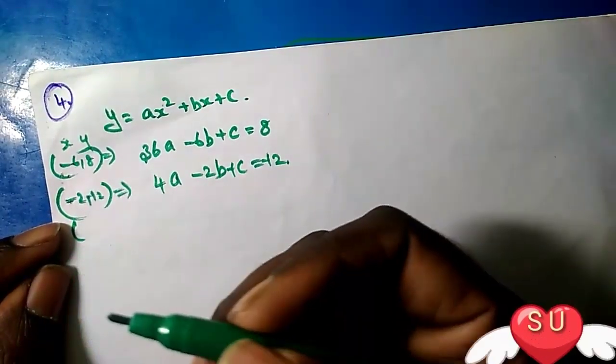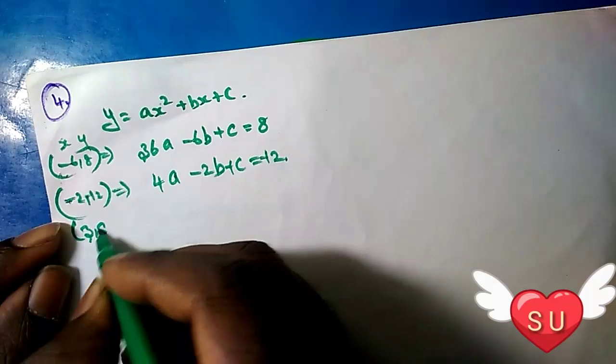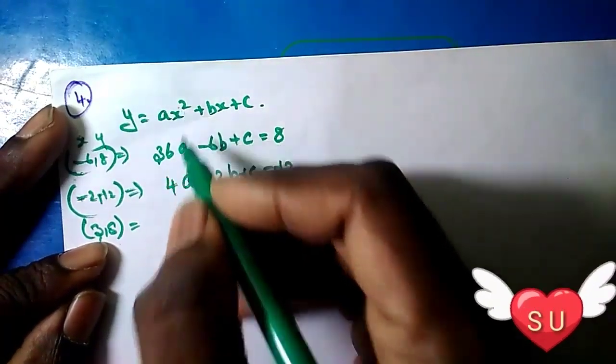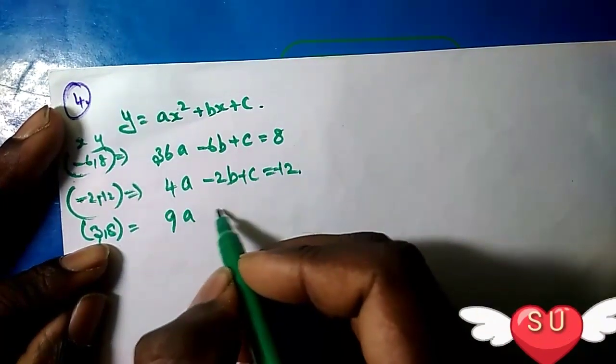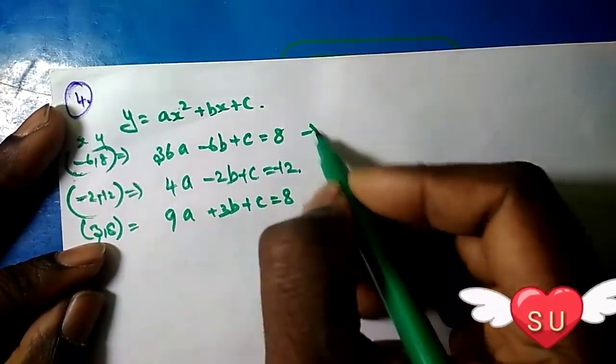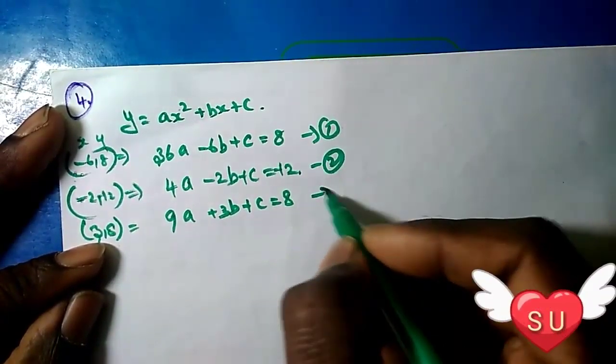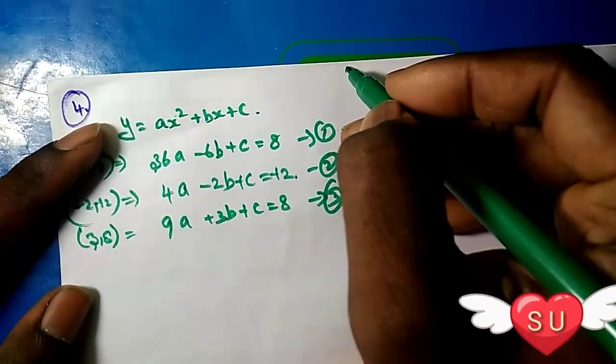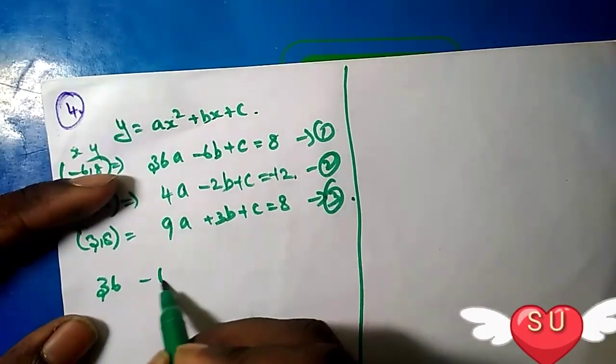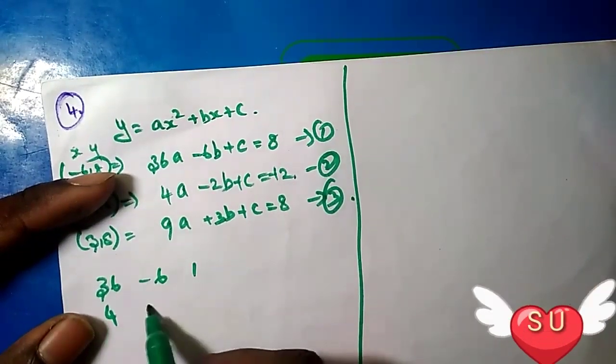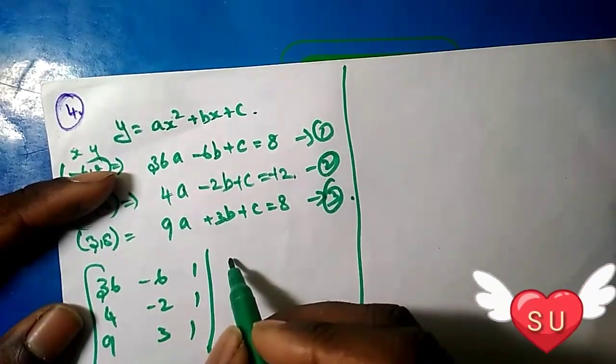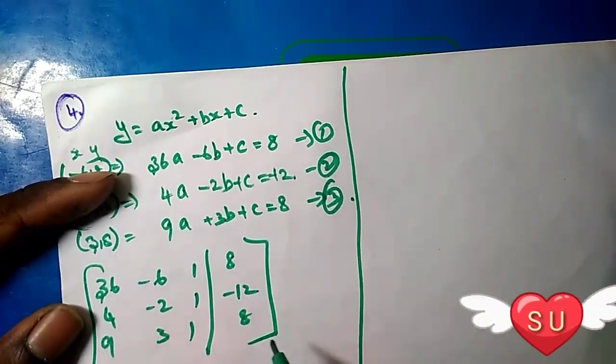The third point is (3, 8). When x = 3 and y = 8, we get 3² = 9a, plus 3B, plus C equals 8. So 9a + 3b + c = 8 is the third equation.